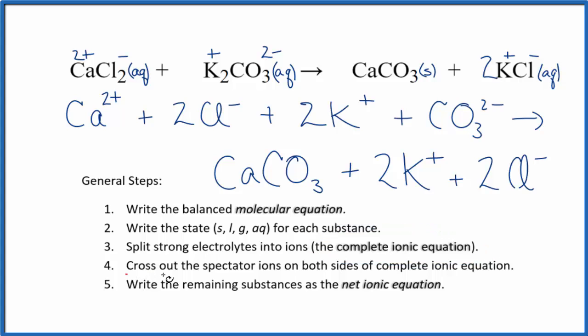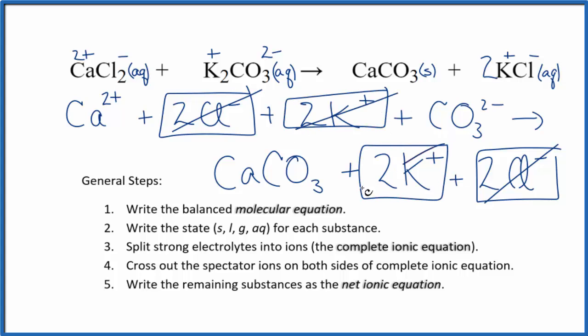Now we can cross out spectator ions. They're on both sides of the complete ionic equation. They haven't changed, so we're not interested in them. In the reactants, I have two chloride ions, in the products, I also have two chloride ions. These are spectator ions, we cross them out. In the reactants, two potassium ions, again in the products. Cross them out. What's left is the net ionic equation for CaCl2 plus K2CO3.